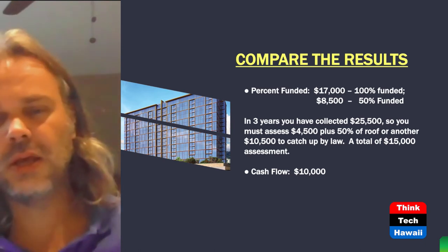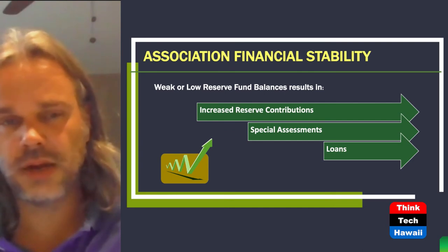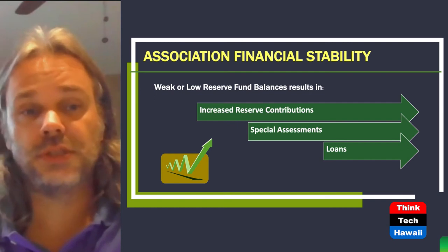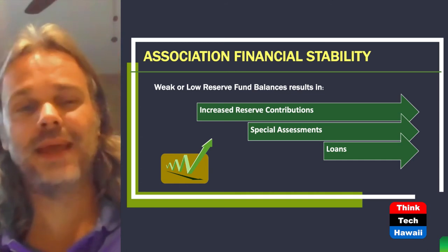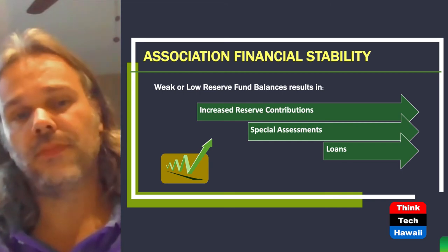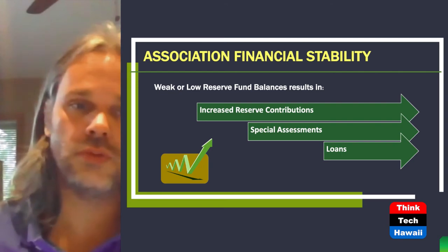If you have a weak or low reserve balance, there are a few things you can do to remedy that. Number one, you can increase your reserve contributions. When I perform a Level 1 reserve study, I regularly see that associations need to increase their reserve contribution to meet their financial obligations. There are huge projects coming — waste deck replacements that cost associations millions of dollars that have not been planned for until just recently. Associations need to start planning financially for those. Other methods to fund projects include a special assessment or a loan, but always keep in mind that a reserve study is meant to avoid special assessments or loans.